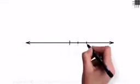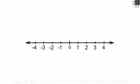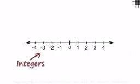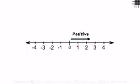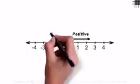All of us know what a number line is and the numbers we see here on the number line are called integers. On the right side of zero we have positive integers and on its left we have negative integers.